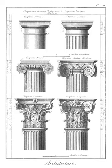Vierendeel truss: a rectilinear truss usually fabricated of steel or concrete with horizontal top and bottom cords and vertical web members, in which the loads imposed on it are transferred to the supports through bending forces resisted in its connections.